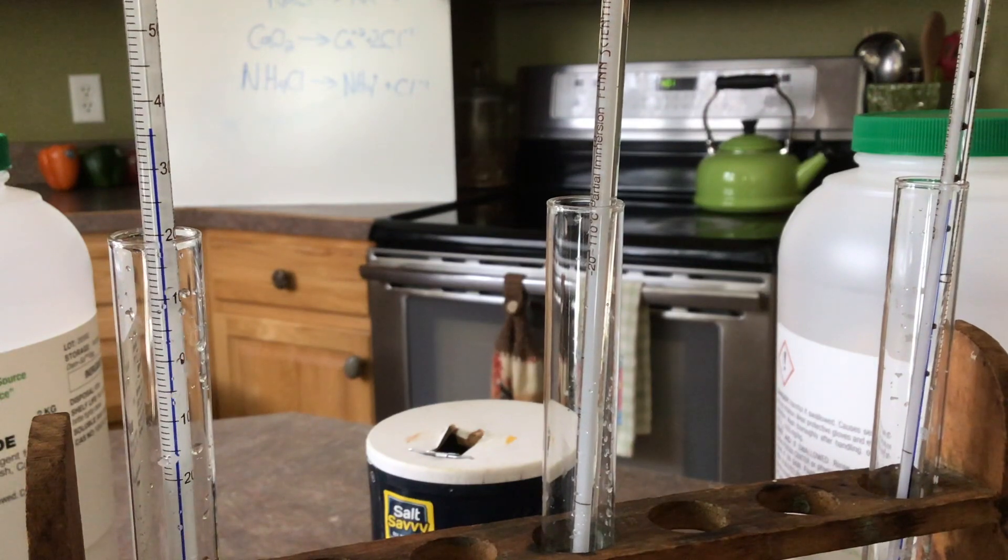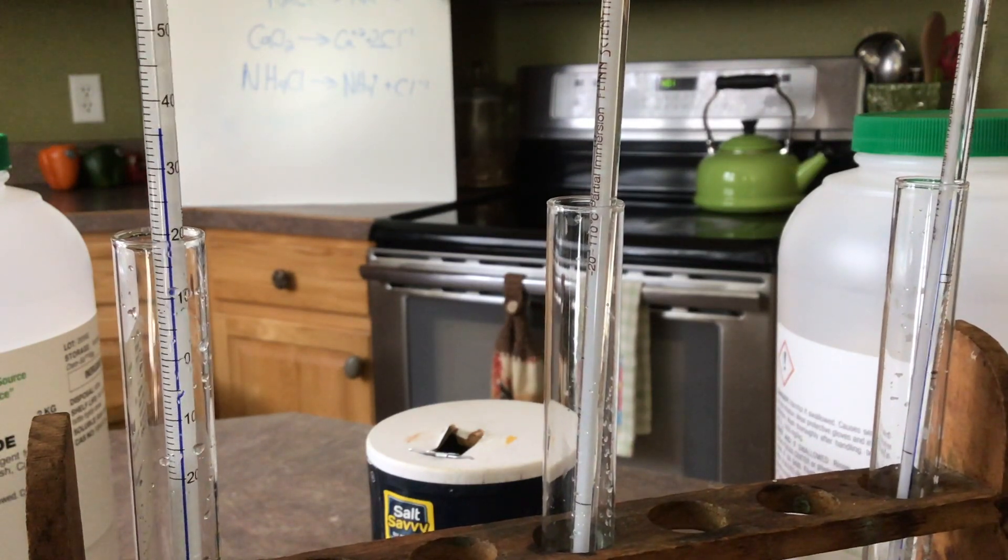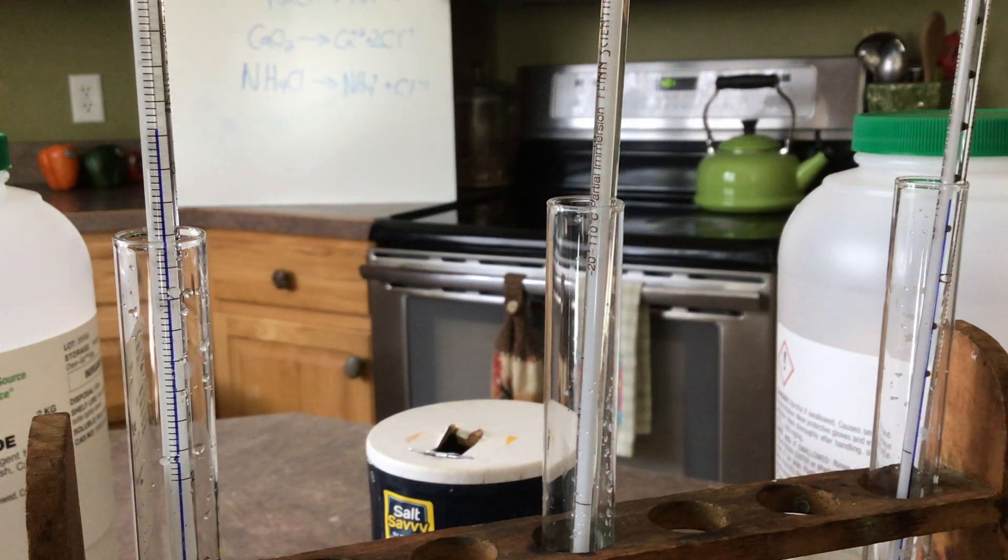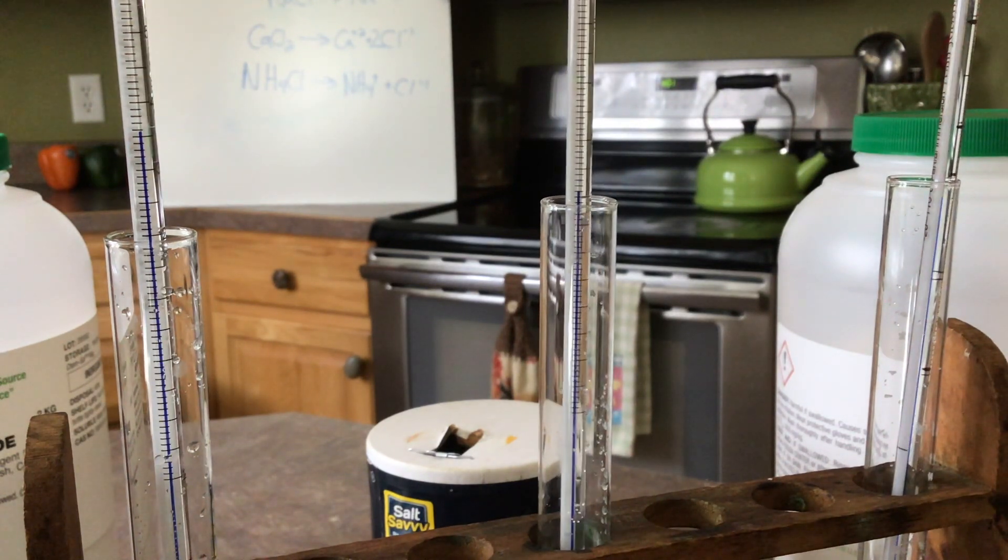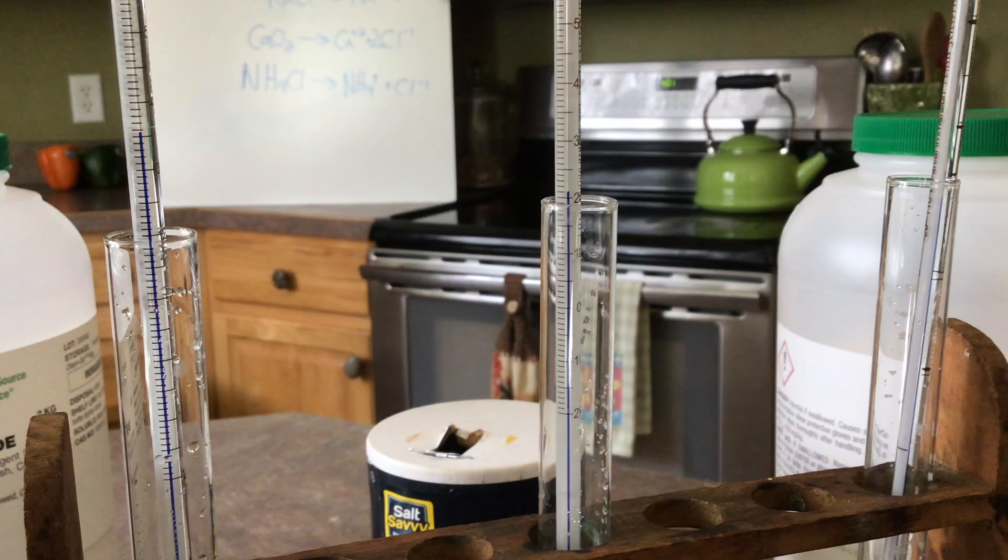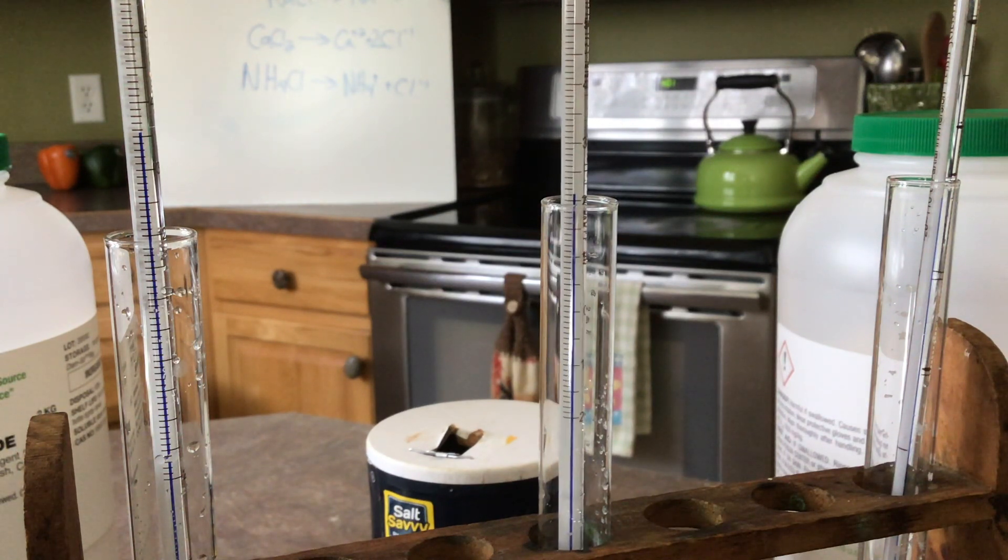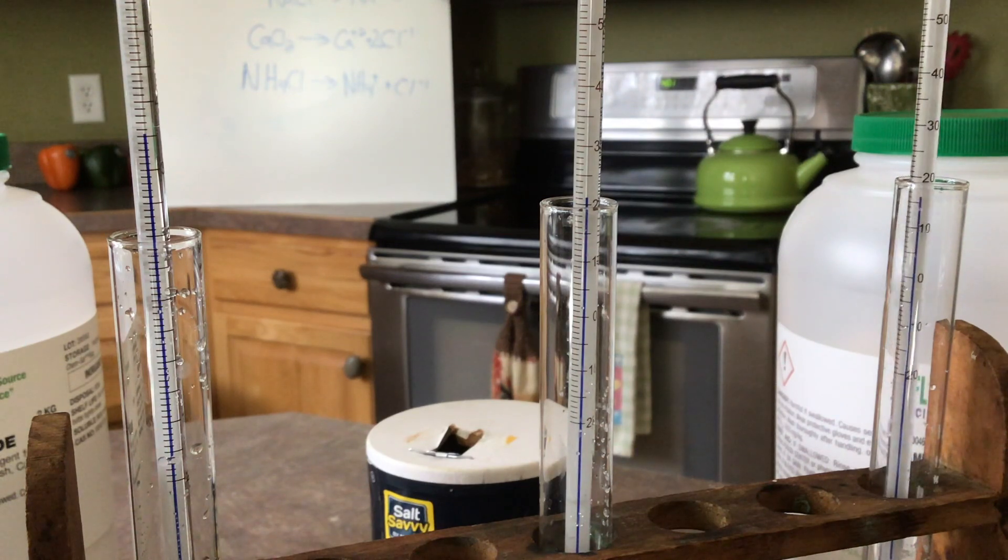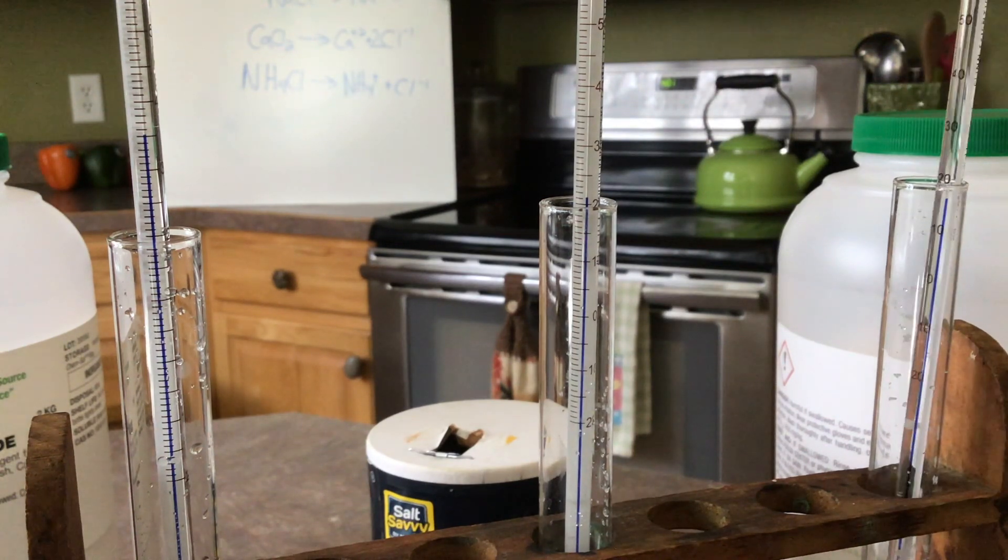Let's go ahead and take a look at those final temperatures. With our calcium chloride, we've gone all the way up to 36.0. For our sodium chloride, it appears as if we are at about 21.0. And for our ammonium chloride, the temperature has decreased down to 16.0.